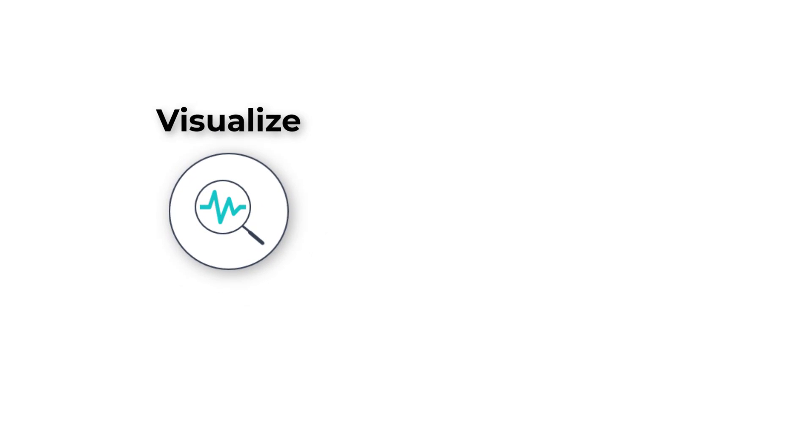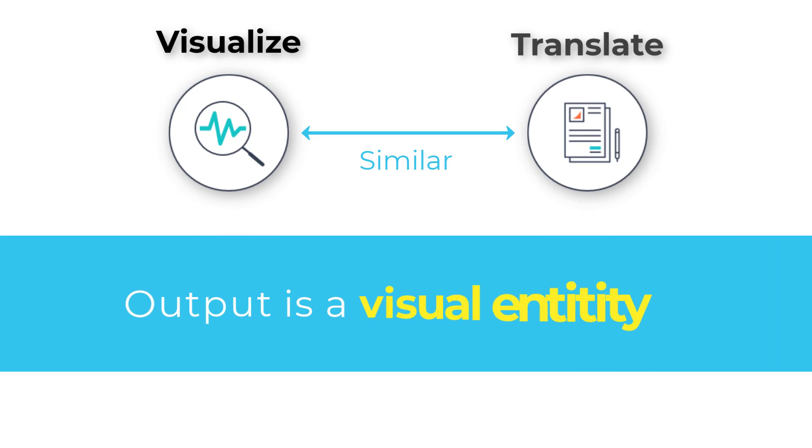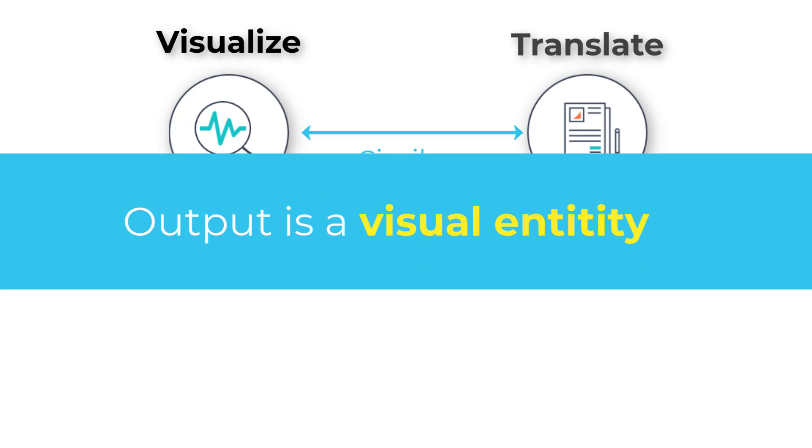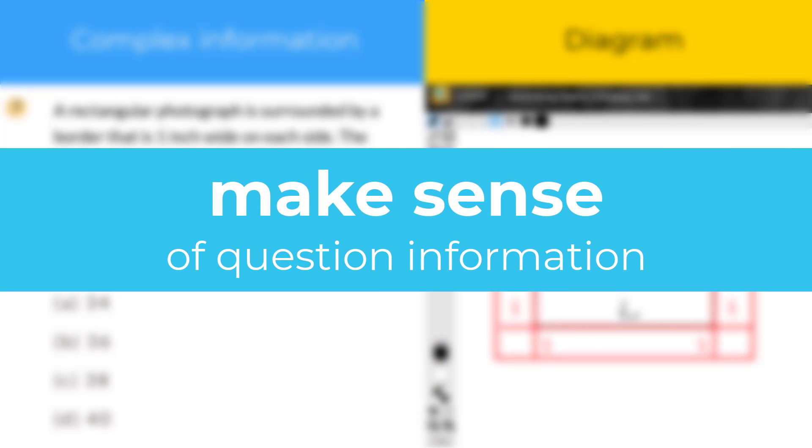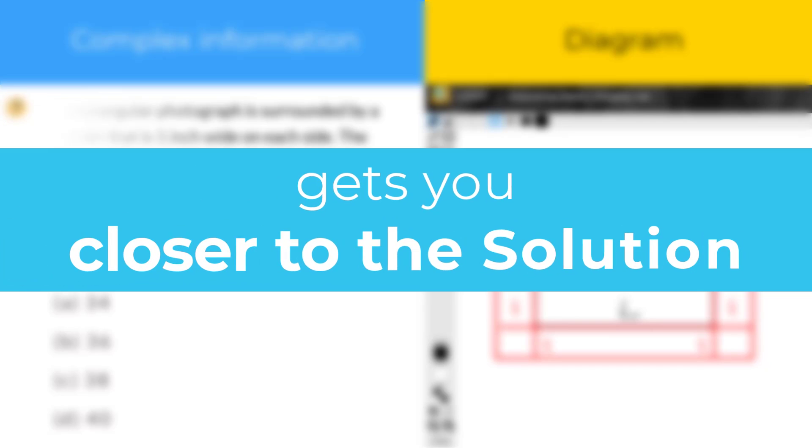Now Visualize process skill is very similar to translate process skill with the only difference being that in Visualize the output is a visual entity, be it a table or a diagram. Essentially anything that helps you make more sense of the information given in the question and gets you closer to that solution.